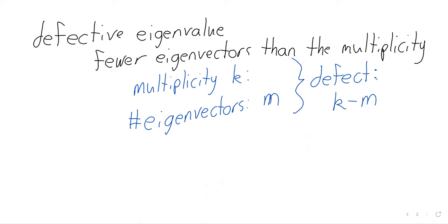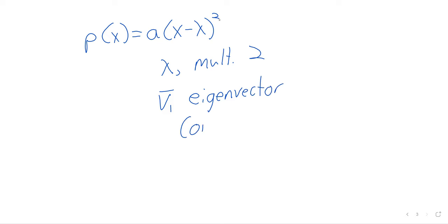We saw the situation in the two-by-two case. In the two-by-two case, the only way this could happen is if there's only one eigenvalue and it has one eigenvector. And in that case, our characteristic polynomial looks like x minus lambda squared. So we have an eigenvalue lambda with multiplicity of two. We have only one eigenvector. So in that case, this eigenvalue lambda has a defect of one.